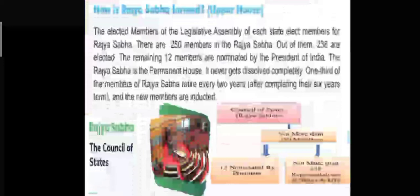Rajya Sabha is a permanent body and is the Council of States. Total members: 250 — 238 members from the states and union territories, and 12 members nominated by the President. The 12 nominated members are usually scholars from various fields like literature, science, commerce, social services, arts, etc. Members are elected for six years; however, one third of members retire every two years. They are elected by the members of the Legislative Assembly of each state.